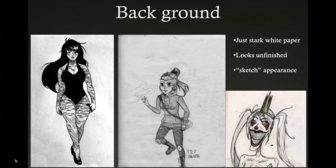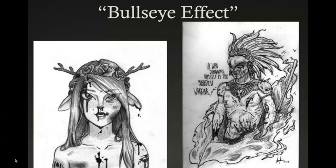In AP, when the pieces were critiqued, I received feedback like the background was empty, making the pieces look like sketches and unfinished. In terms of composition, a lot of my drawings featured a figure in the center of the piece, leading to something we call the bullseye effect. The problem with the bullseye effect is it creates a strong point of interest in the center, but a lack of visual movement throughout the piece.